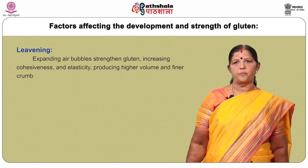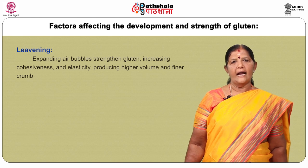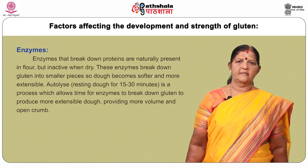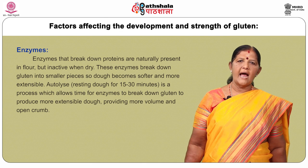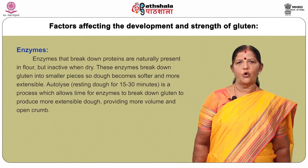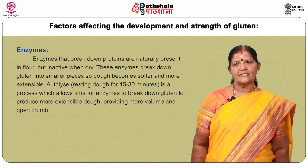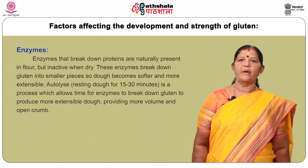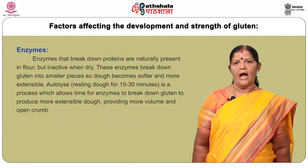Leavening: Air bubbles strengthen gluten, increasing cohesiveness and elasticity, producing higher volume and finer crumb. Enzymes: Enzymes that break down proteins are naturally present in flour but inactive when dry. These enzymes break down gluten into smaller pieces so dough becomes softer and more extensible. Autolyze is resting dough for 15–30 minutes, a process that allows enzymes to break down gluten to produce more extensible dough, providing more volume and open crumb.